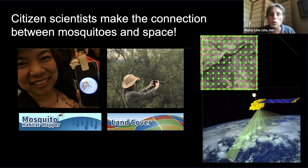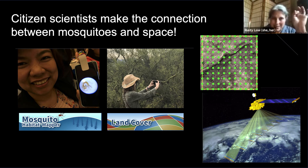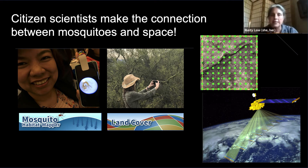As a citizen scientist, you are making that connection between mosquitoes on the ground and the data we get from space, and we're doing that by using the GLOBE Observer app. What we are presenting is the way to get the best information for our research — using the Mosquito Habitat Mapper to also take coincident land cover measurements. That takes those little mosquitoes we can't see from space and puts them in a landscape we can document on the ground, then connects that to the satellite data.